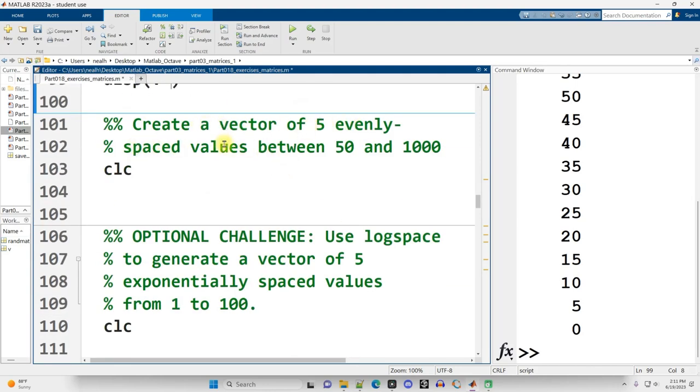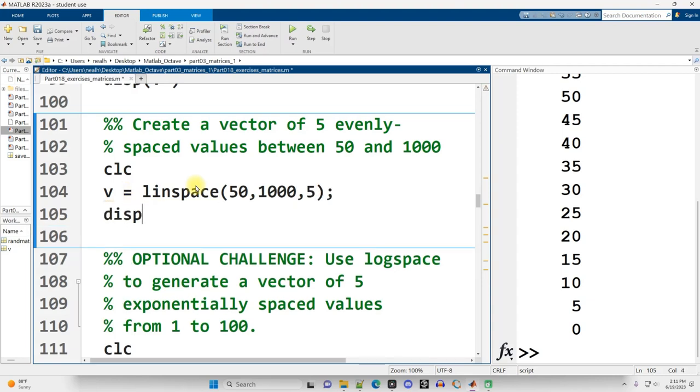Create a vector of five evenly spaced values between 50 and 1,000. Now, because there are five total values, I want to use linspace to let it figure out what the spacing needs to be for me so that I don't have to calculate it, which I could do, but I don't feel like it. So V equals linspace starting at 50, ending at 1,000, and total count of five total values. And there we go.